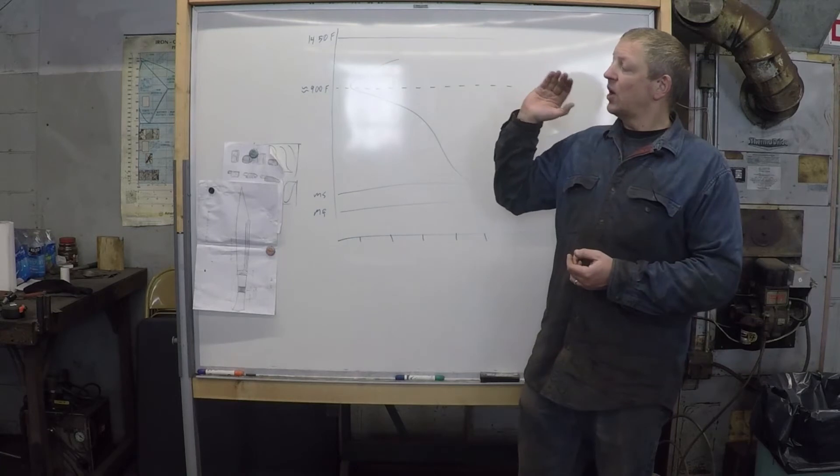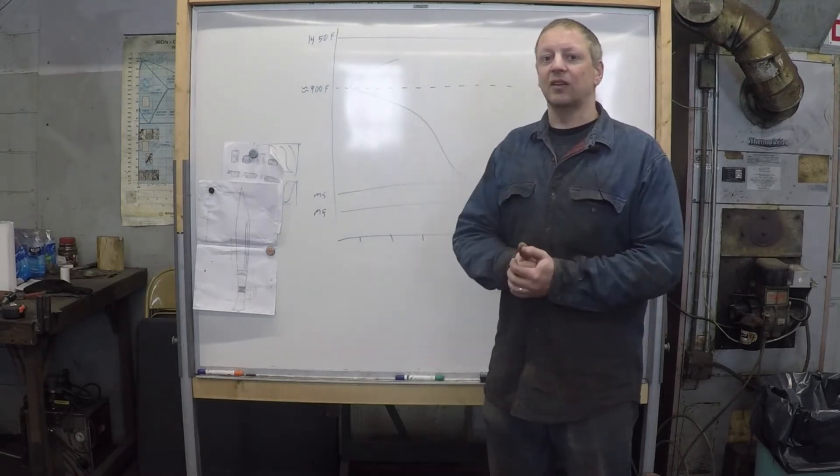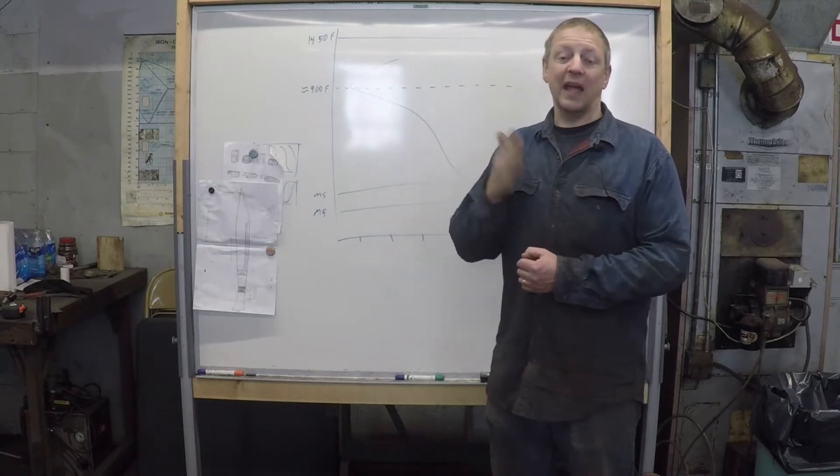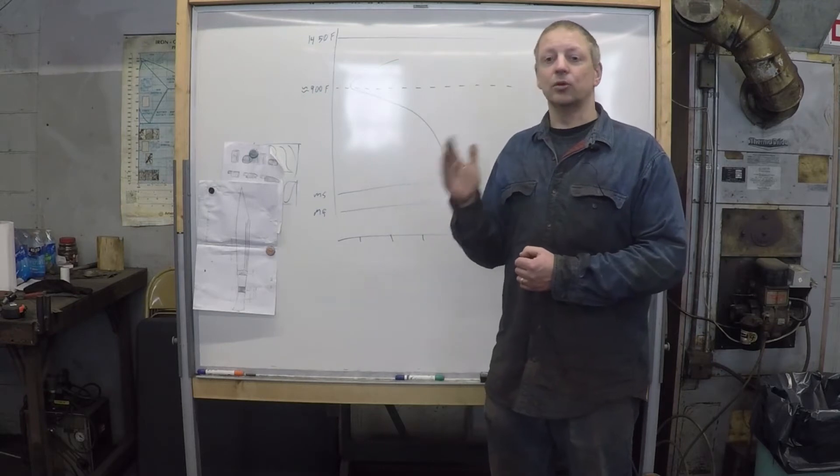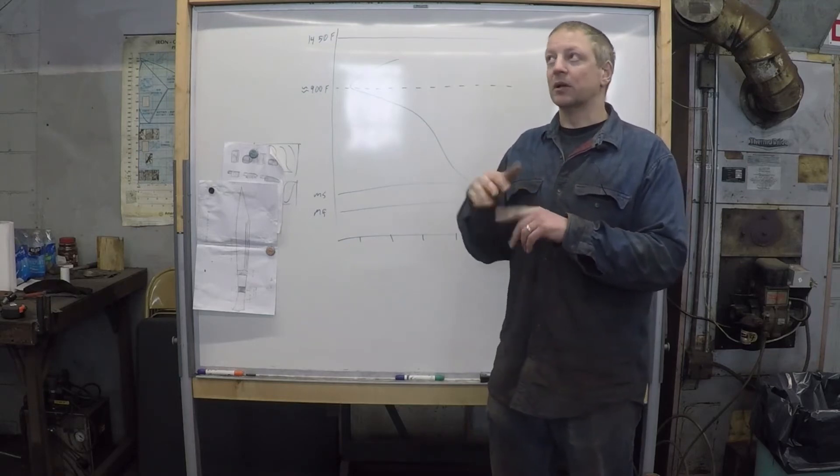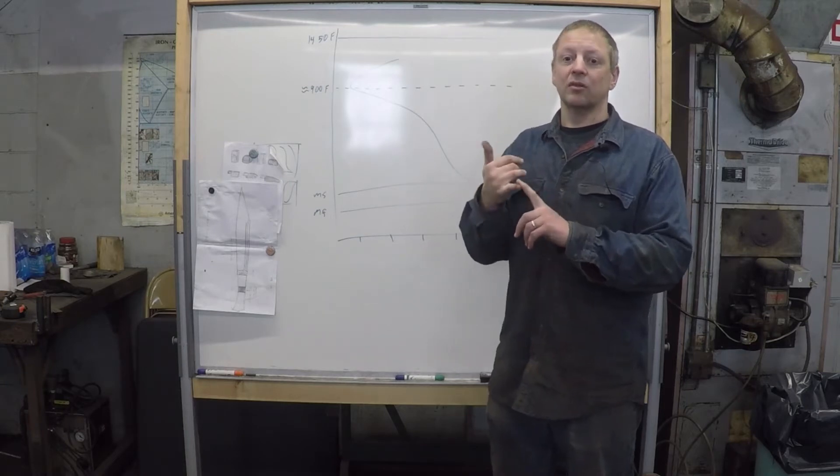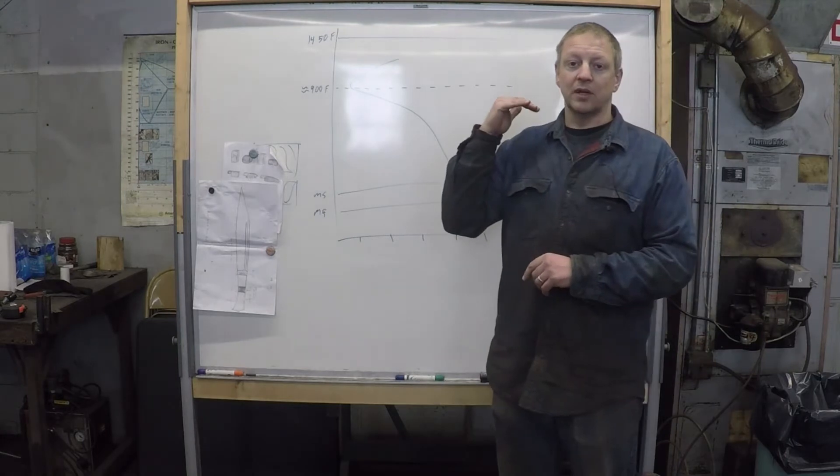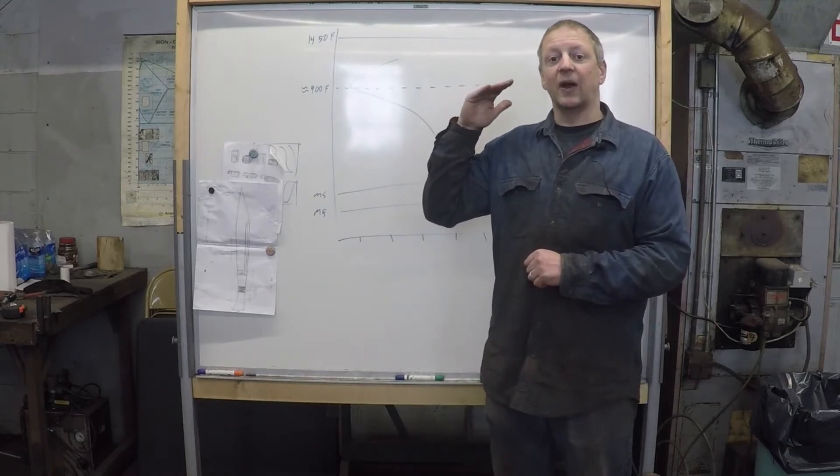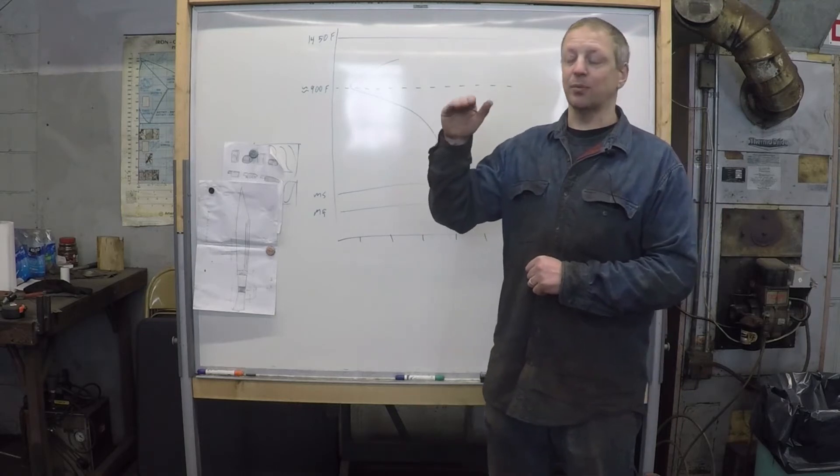So adding alloys changes the eutectoid point of your steel. So when you read, oh, this steel is a eutectoid steel, if it has alloying elements added to it, it's no longer a eutectoid steel. Because, for example, let's say you add chromium or vanadium or molybdenum or any of the carbide-forming elements, they're going to form carbides. Those carbides are much more resistant to dissolving at what would normally be considered critical.